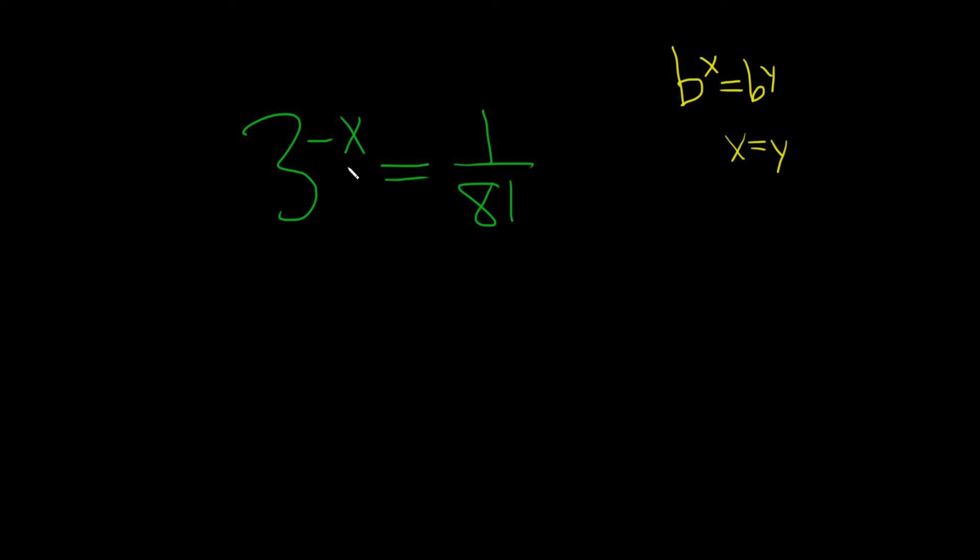So here we have 3 to the negative x. Let's try to make it a 3 on both sides. We'll keep this 3. And then over here, let's think about how we can involve 3. Let's keep the 1 the same. And 81 is 9 times 9, which is really 3 squared times 3 squared, which is 3 to the 4th. So 81 is really 3 to the 4th.